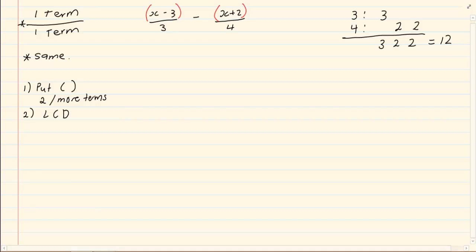We need to make the LCDs of each expression the same. Now how do I change this 3 to 12? I am going to multiply it. If I take out the 3, I am going to multiply it by 4. When you got your LCD, what you do on top, you must do at the bottom, or what you do at the bottom, you must do on the top.